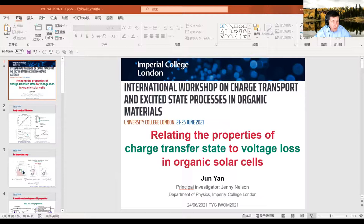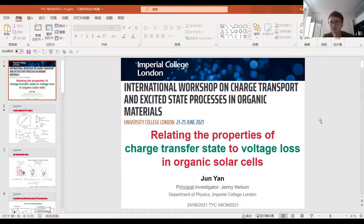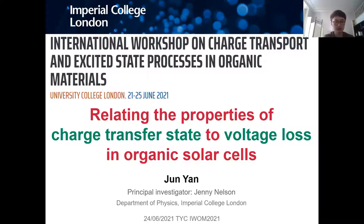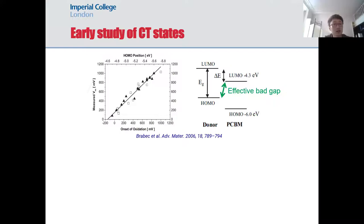Thank you very much for the opportunity. I'm Jun Yang from Jenny Jessen's group at Imperial College. Today I want to talk about charge transfer states and voltage loss in organic solar cells. Speaking of charge transfer, it's a well-known concept in biology and chemistry. In the field of organic solar cells, it's very important because it controls free charge generation.